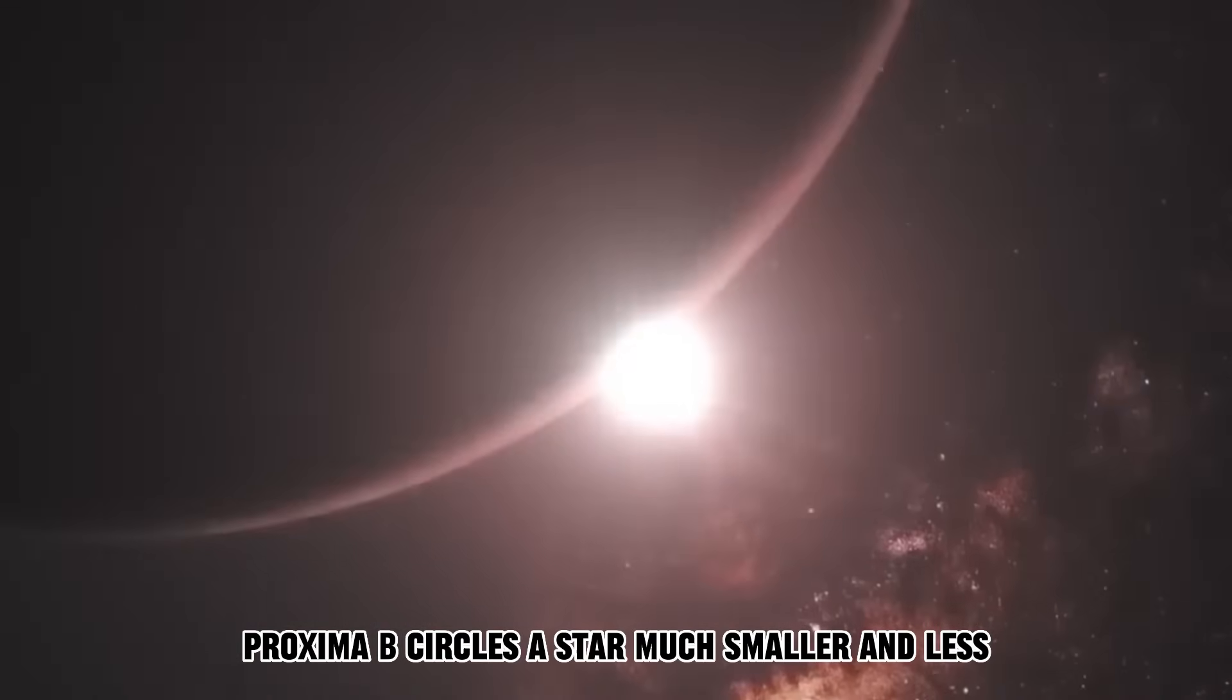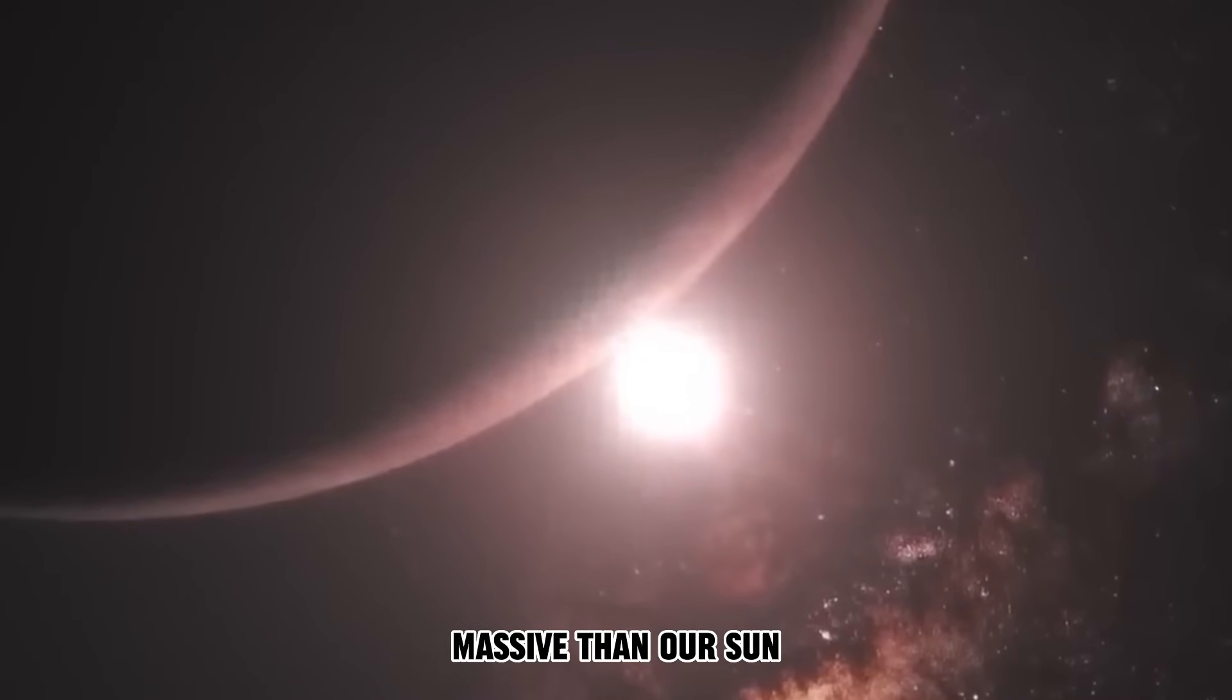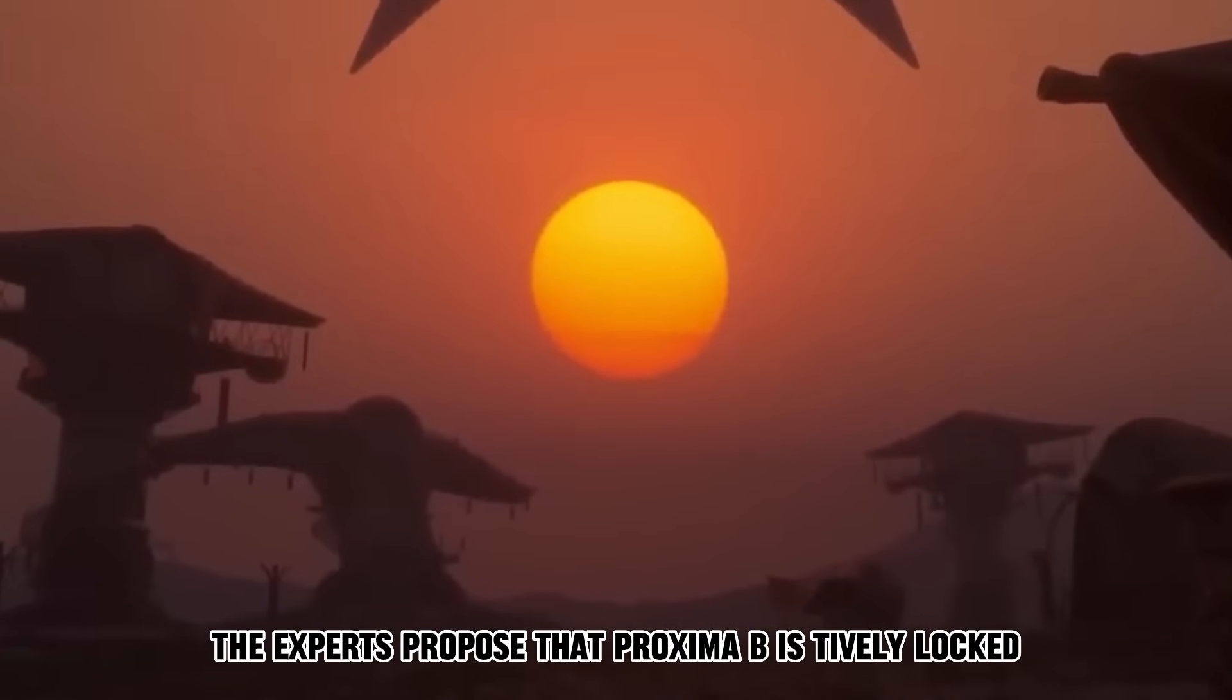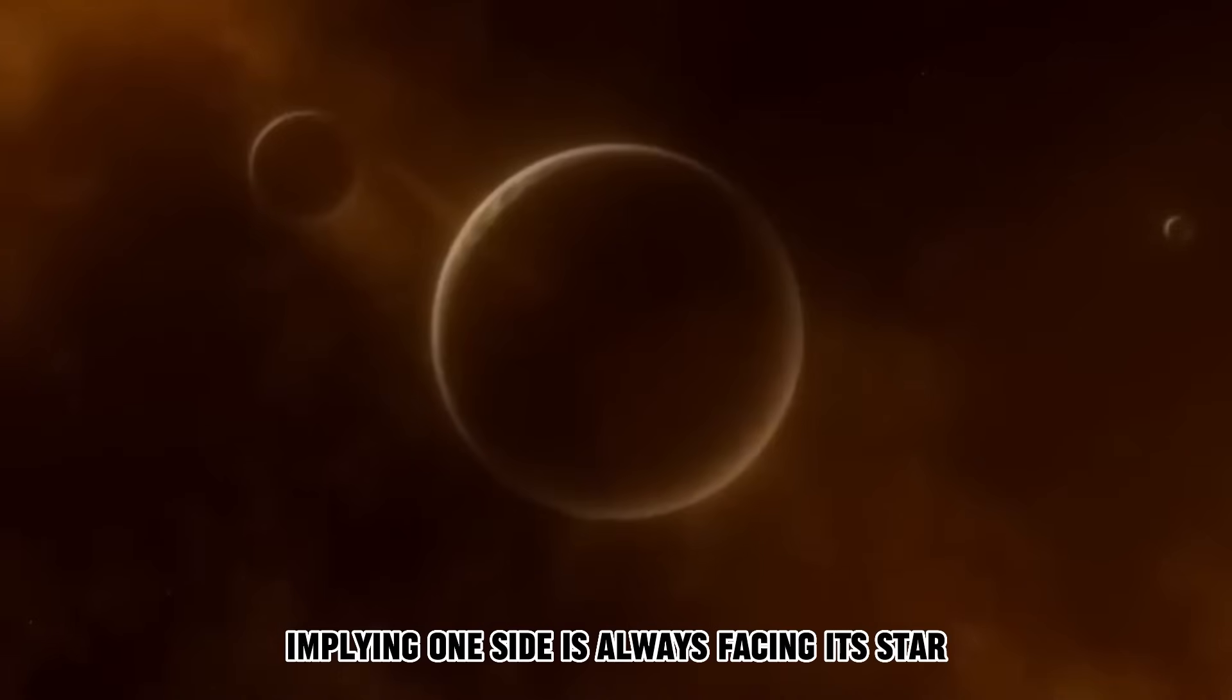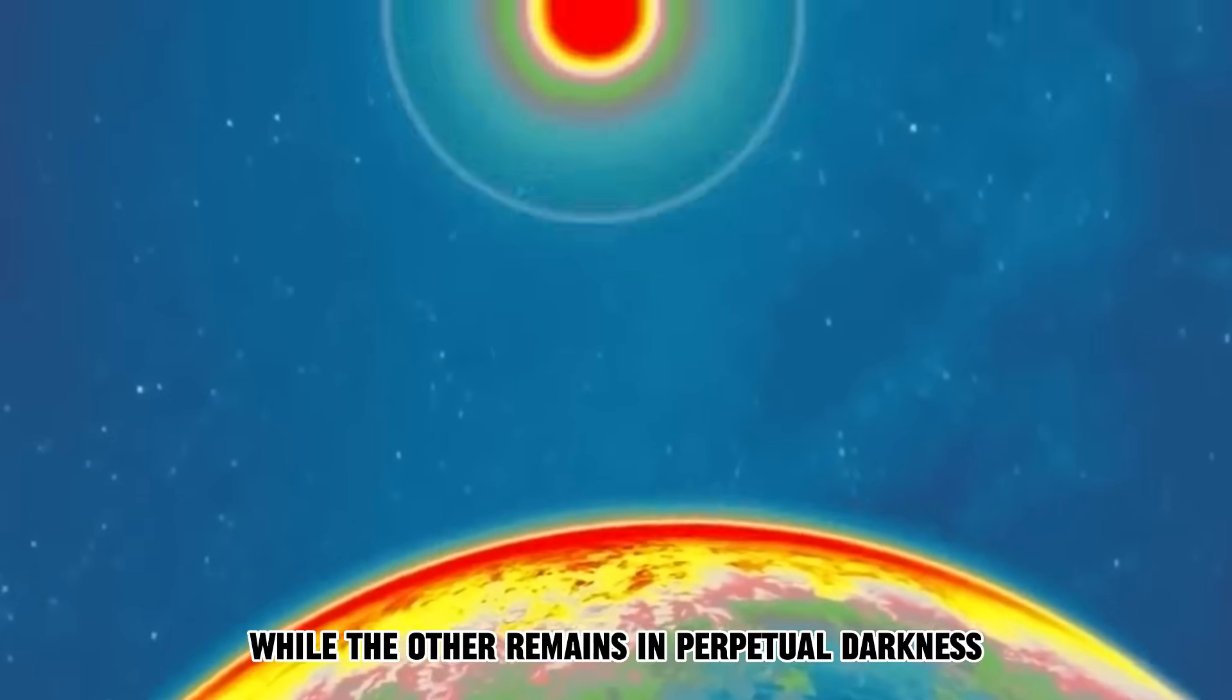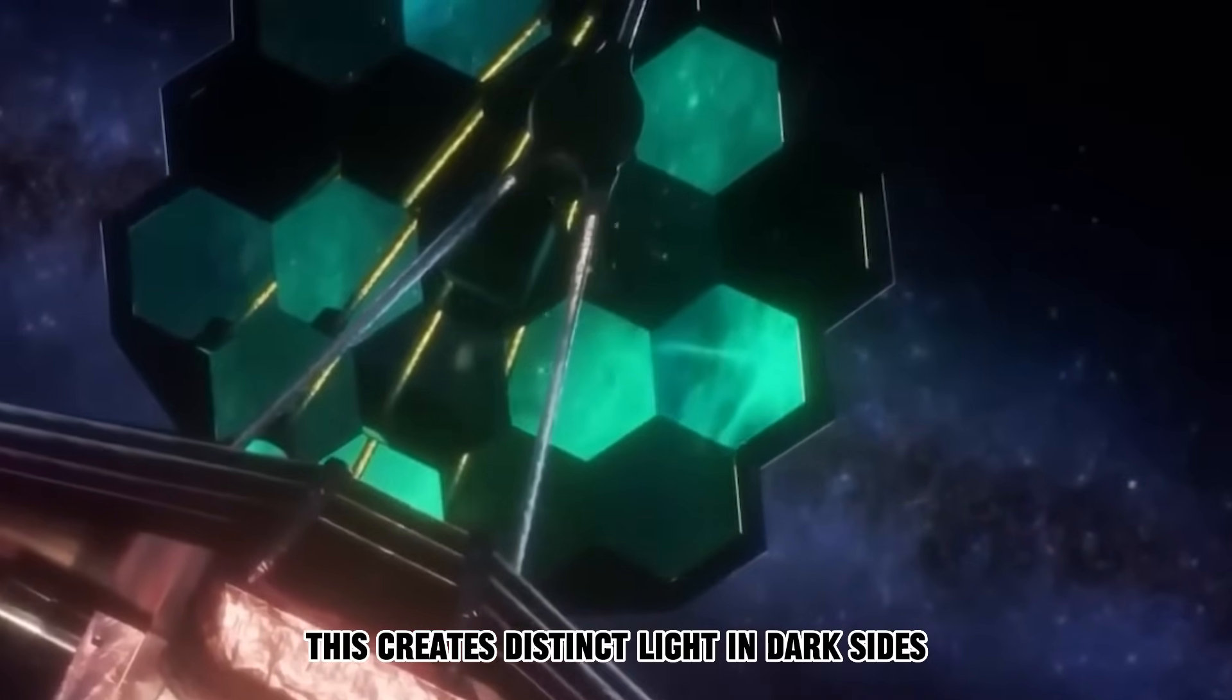Proxima b circles a star much smaller and less massive than our Sun. It's located remarkably close to our solar system. The experts propose that Proxima b is tidally locked, implying one side is always facing its star, while the other remains in perpetual darkness. This creates distinct light and dark sides.